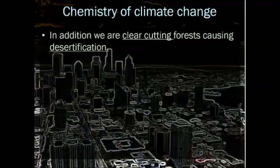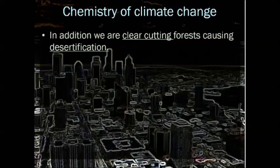Some other things contributing to climate change are clear cutting of forests and desertification — two words from your vocabulary list. Clear cutting is when all of the trees are cut down in a forest. We often do this in rainforests to make room for farmland, which is counterproductive because the soil in a tropical rainforest is really poor and doesn't support crops for a very long period of time. Then those areas just end up being deserts — the soil can't really sustain crops for very long.